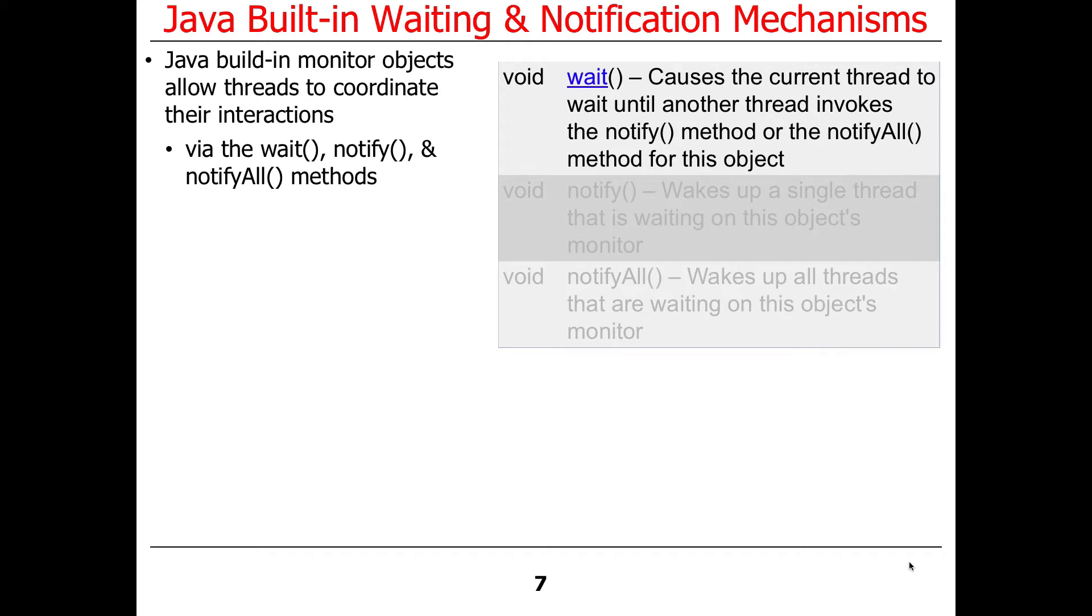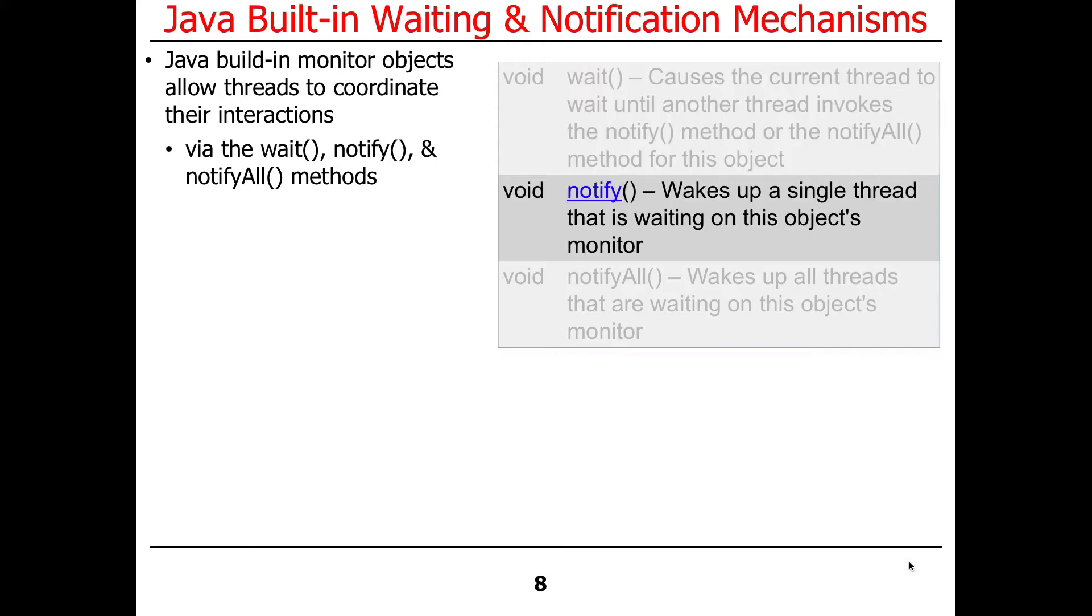The semantics of wait are similar to the semantics of a wait on a condition object, in that they cause the current thread to block or wait until some other thread invokes notify or notify all on that object. Notify wakes up a single thread that's waiting on the object's monitor, and notify all wakes up all the threads waiting on this object's monitor. Those are very similar to the signal and signal all methods in condition object.